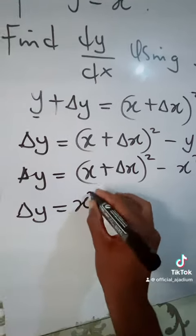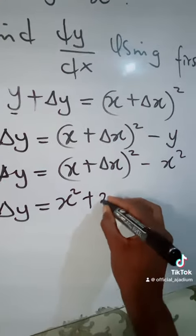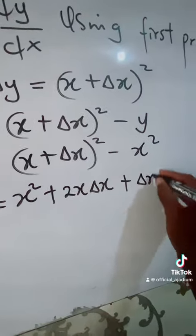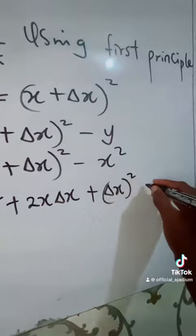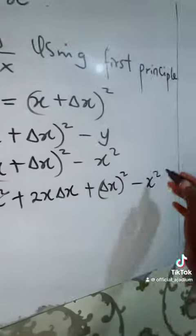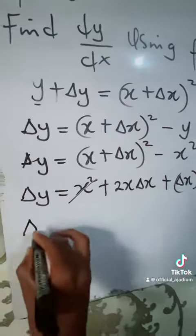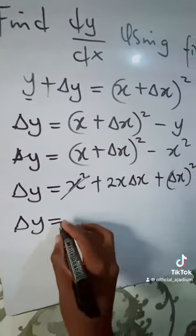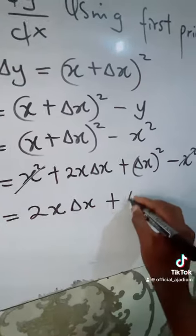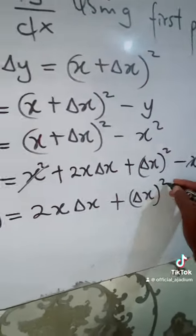So when we expand this, we are going to get x squared plus 2x change in x plus change in x all squared, minus x squared. Then you see this x squared is going to cancel this x squared. So change in y equals 2x change in x plus change in x all squared.